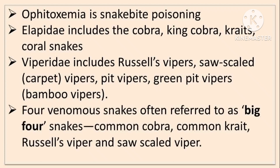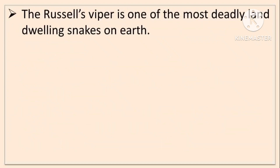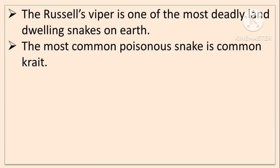Four venomous snakes are called the Big Four, commonly found in India: Common Cobra, Common Krait, Russell Viper, and Saw-Scale Viper. Russell Viper is one of the most deadly land-dwelling snakes on earth and is stouter. The most common poisonous snake in India is Common Krait.